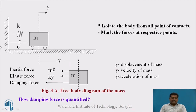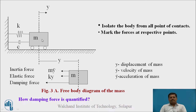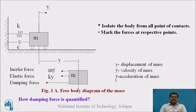Now we solve the wagon wheel model to arrive at the mathematical equation. The first step is to isolate this body from all points of contact — isolate K and C from this body. Then mark the force set at respective points of contact. The forces are: inertia force, elastic force, and damping force. Y is the displacement of the mass, y-dot is the velocity (dy/dt), and y-double-dot is the acceleration — the second derivative of displacement with respect to time (d²y/dt²).